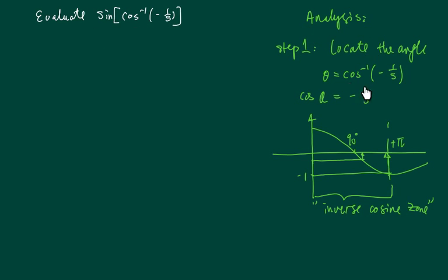Analysis goes something like this. First, we've got to locate where this mystery angle is. When cosine inverse is minus 1 over 5, that's equivalent to saying cosine of some mystery number is equal to minus 1 over 5.